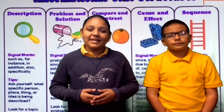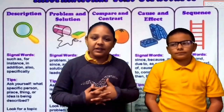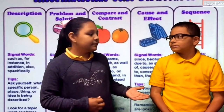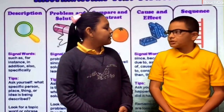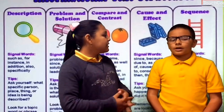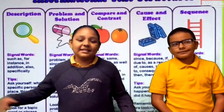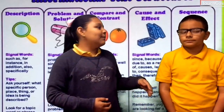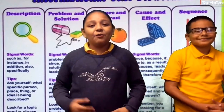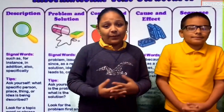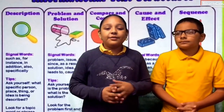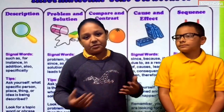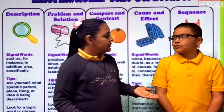Every expository piece has one out of five text structures. The five text structures are Problem and Solution, Sequence, Description, Compare and Contrast, and Cause and Effect. And the piece A Life in the Woods has the text structure Problem and Solution. We think that it is Problem and Solution because Thoreau couldn't write a book because his family was being too noisy, and the solution was he had to move to the woods.